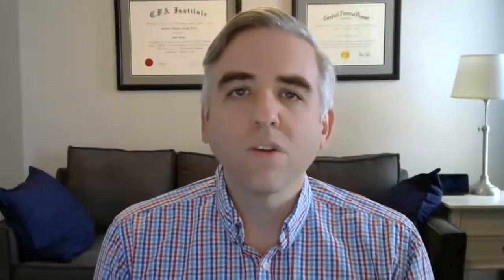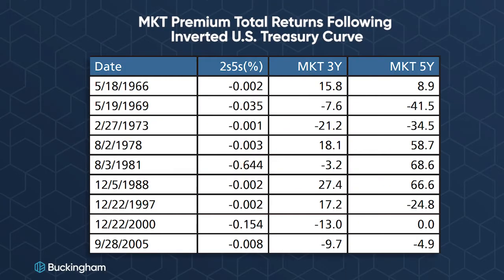We do see that correlation in the historical data, but that isn't enough to determine whether you should make any changes as an investor. Our investment strategy team has actually looked at the data on this going back to 1961, and we found that the yield curve actually inverted nine different times over that history.